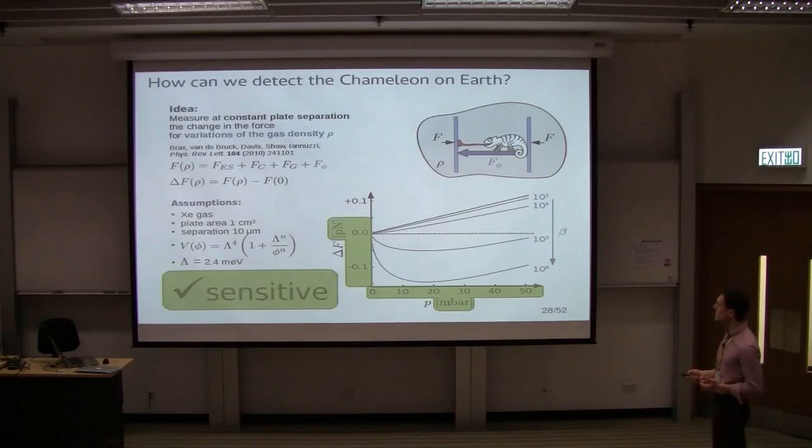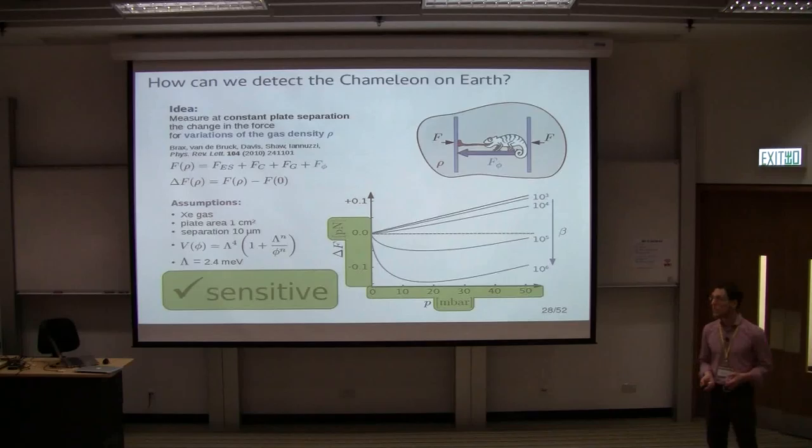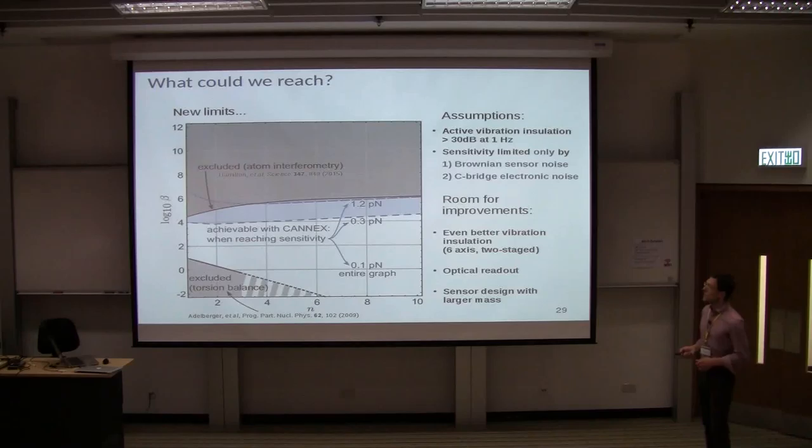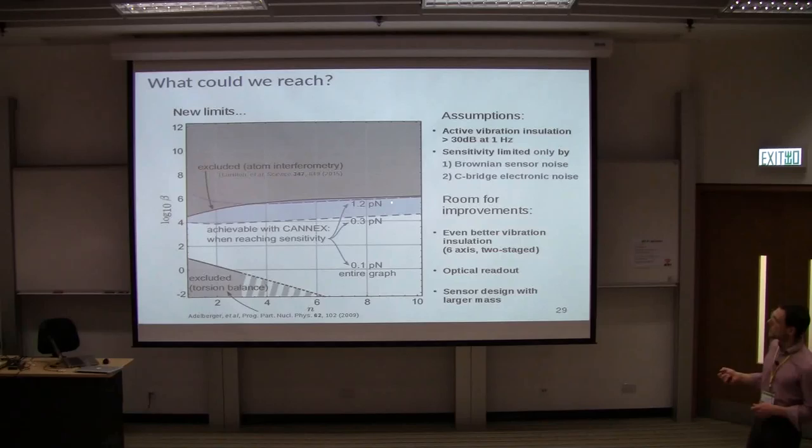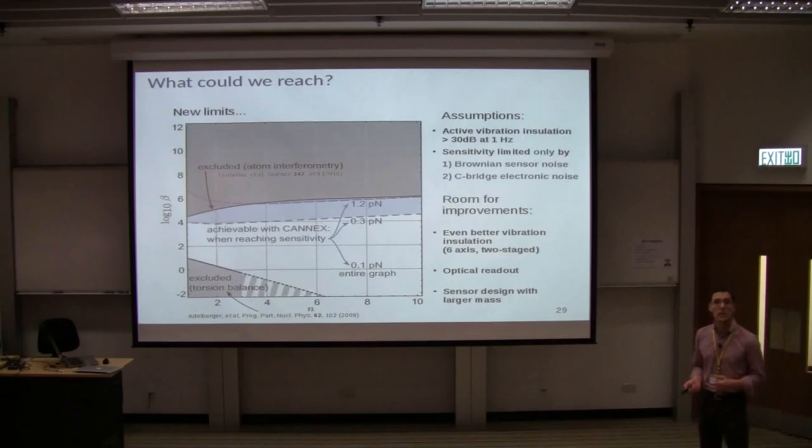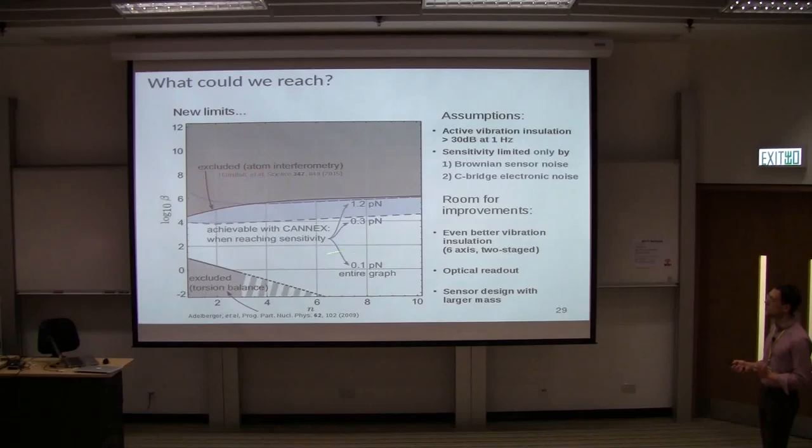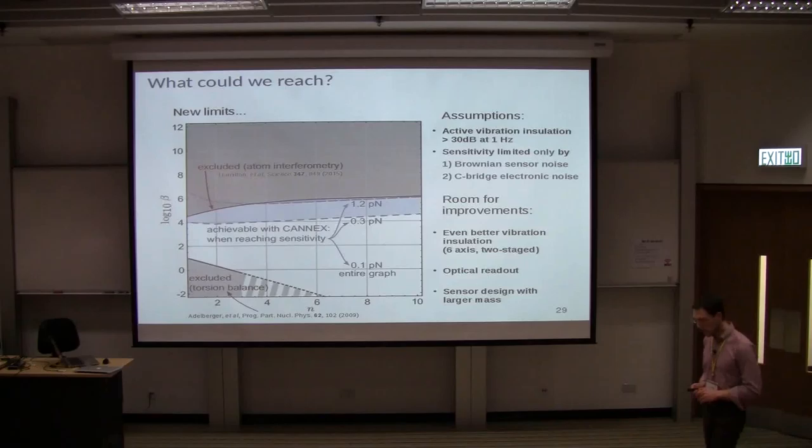If you look at the scales, they are very well experimentally accessible. The millibar is not a problem. Here we meet again with 0.1 piconewton. Okay. Now let's have a look at what we can actually achieve. I didn't calculate this. This was from our theoretical colleagues. If we reach this 1.2 piconewton, which I've already mentioned, then we are approximately at the same level as the best upper limit which is coming from atom interferometry. If we can go down to 0.3, we can improve this limit by two orders of magnitude. And the really peculiar fact about our experiment is that if we could reach 0.1 piconewton, we could entirely rule out this model.